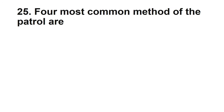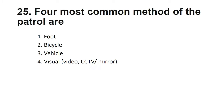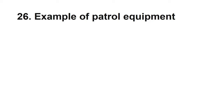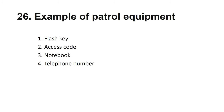The four most common methods of patrol are: foot patrol, bicycle, vehicle, and visual. Examples of patrol equipment: flash key, access code, notebook, telephone numbers, portable radio, and security license. These are some of the essential equipment required when conducting patrols.